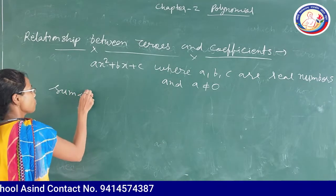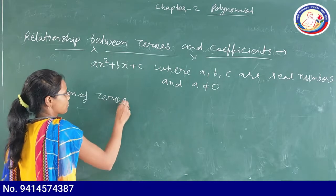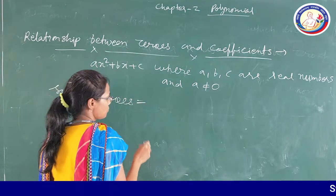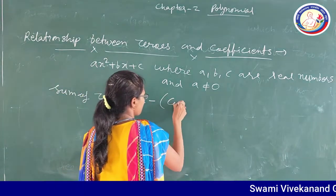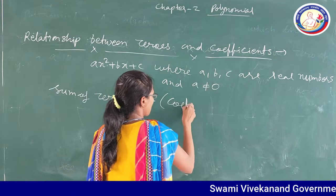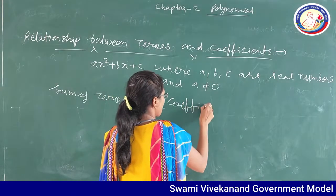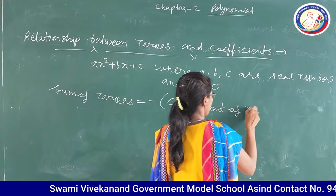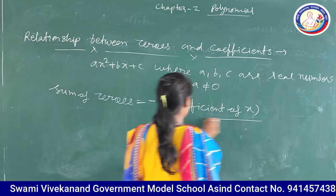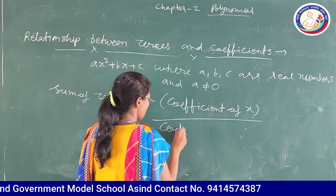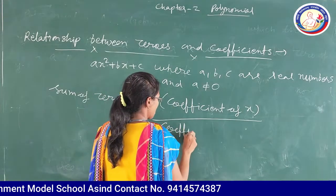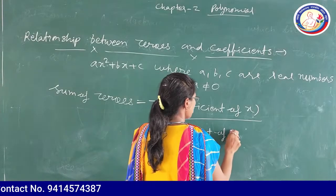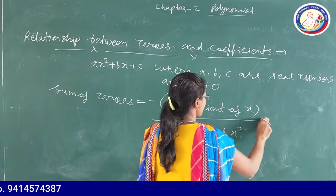For a quadratic polynomial ax² + bx + c, the sum of zeros formula is: sum of zeros equals minus coefficient of x upon coefficient of x².